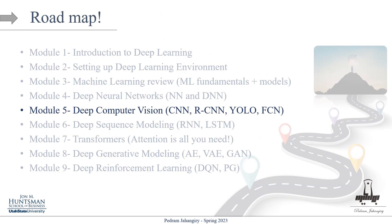That's it for today. This was part 1 of module 5 on deep computer vision. We covered the basics: what computer vision is, how computers see things, and why we should go beyond fully connected networks. In the next part, we'll talk about CNN architectures and details, specifically focusing on different types of convolutional operations. Until the next one, take care.